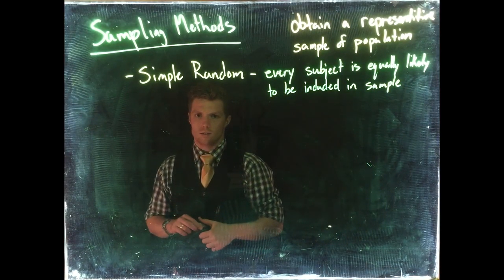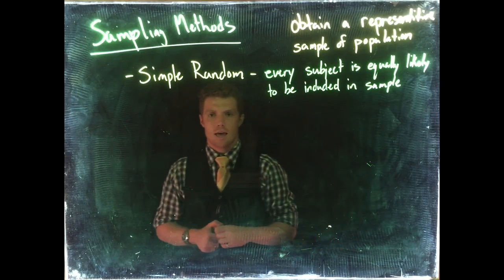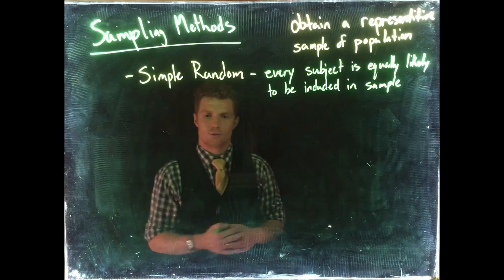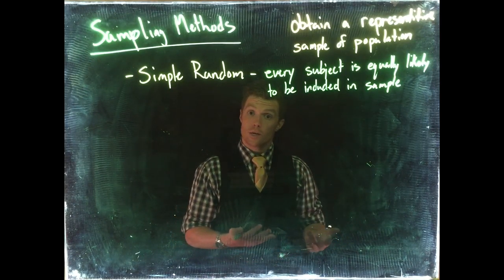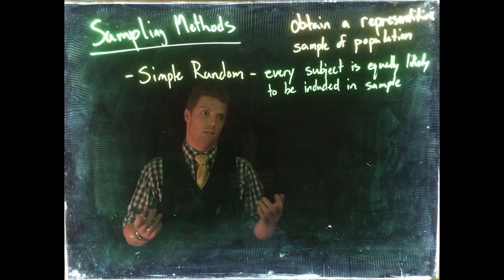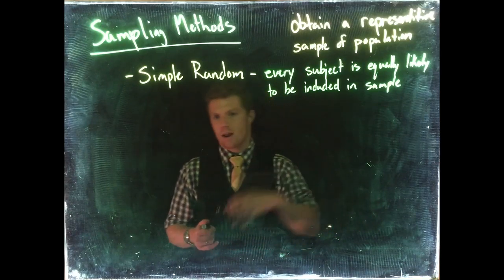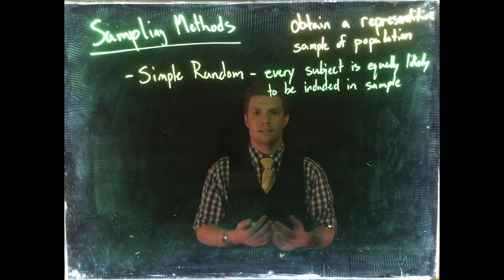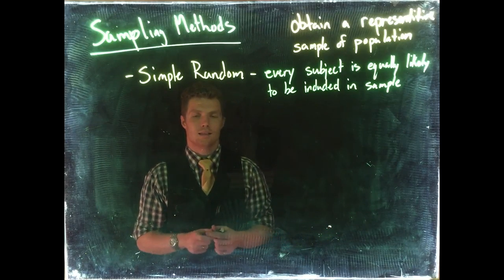If we take the population of all students at Casper College and wanted to figure out how many credit hours they were taking, one way we could do that is write everybody's name on a ping-pong ball, put it into a gigantic box or hat, stir it up, and randomly select out 40 balls. That would provide us a simple random sample where everyone was equally likely to be included.